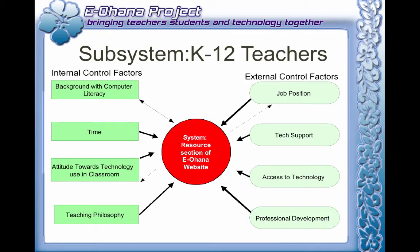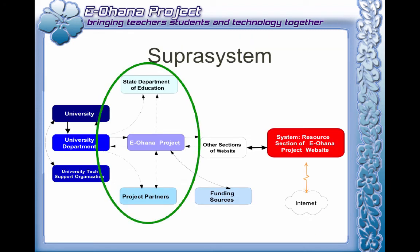Here is the subsystem — the K-12 teachers. They've got both internal and external control factors: computer literacy, time, attitude about technology, and teaching philosophy; and for external control, job position, tech support, access to technology, and professional development. In the super system, the Department of Education is at the top with very thin lines to the Eohana project and project partners — this spells disaster for a project, and those communication lines need to be strengthened. The internet is also important since it influences style and marketing of the website.